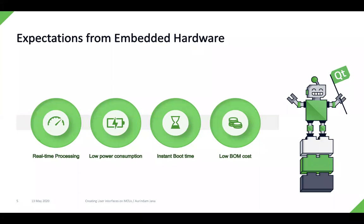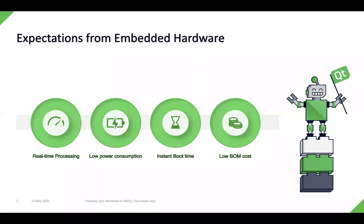From the embedded hardware perspective, there are certain requirements that these devices have. Real-time processing is important — for example, on your thermostat or microwave oven, information needs to be shown in real-time. On top of that, you have to have low power consumption. For battery-operated devices like smart wearables and smart watches, power consumption is an important criteria. But not just in battery-operated devices — in many household devices, there is an energy rating that determines how much power is consumed, so keeping power consumption low is important even for mains-connected devices.